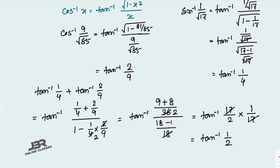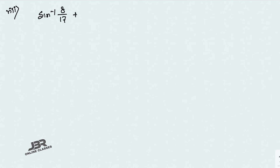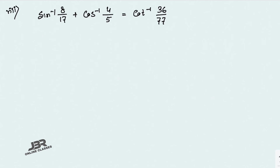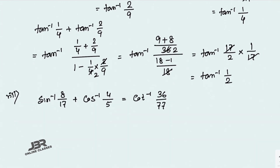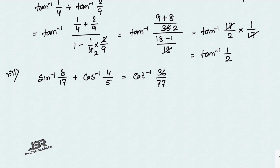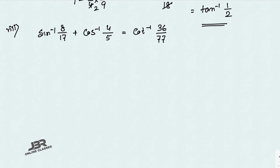Sum number 8: sin⁻¹(8/17) + cos⁻¹(4/5) = cot⁻¹(36/77). The approach is exactly the same as the previous one: first convert sin⁻¹ to tan⁻¹, then convert cos⁻¹ to tan⁻¹, apply the tan⁻¹(x) + tan⁻¹(y) formula. The answer will come as tan⁻¹(77/36); then invert it to get cot⁻¹(36/77).